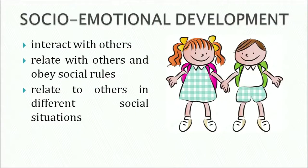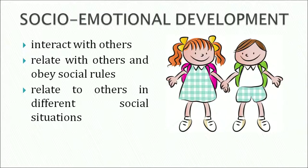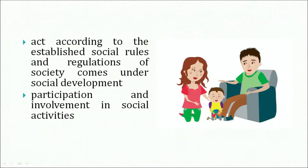When children enter this complex world, they do not know any rules and regulations of society. They gradually learn to interact with others, relate with others, and obey social rules. How we relate to others in different social situations and learn to act according to the established social rules and regulations of society comes under social development. It also includes participation and involvement in social activities and understanding the meaning of being part of a social group. A child is a social being and needs to connect with people around for a fulfilling life.